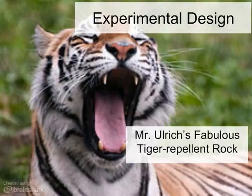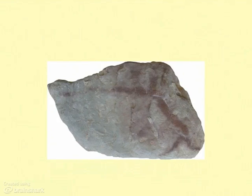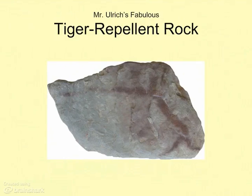Everybody's going to want to have one. I'm going to make a lot of money. So let me show you my rock. Here it is. Isn't it fabulous? That thing's going to make me some money. See, here's the deal: if you are close to my rock — and I know this is just a picture, so you've got to have the real thing — but if you're in the same room with the rock, you won't be attacked by a tiger. I've tested it with a lot of people, and no one has ever been attacked by a tiger when they're in the presence of this rock. So I'm going to package it, sell it — Mr. Ulrich's fabulous tiger repellent rock. I'm going to make a whole bunch of money.